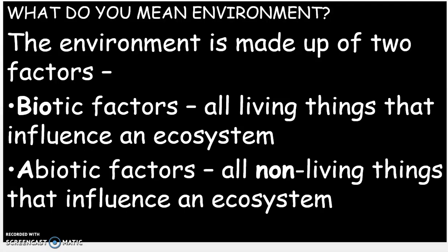So what do we mean about environment? The environment is made up of two factors. The first type of factor is called a biotic factor — those are all the living things that influence an ecosystem. The prefix here, bio, means living.